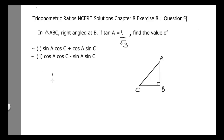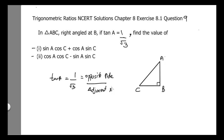We start with tangent of A equals 1 by square root of 3. We know that tangent equals opposite side divided by adjacent side. The opposite side to angle A is BC and the adjacent side to angle A is AB. So BC divided by AB equals 1 by square root of 3.